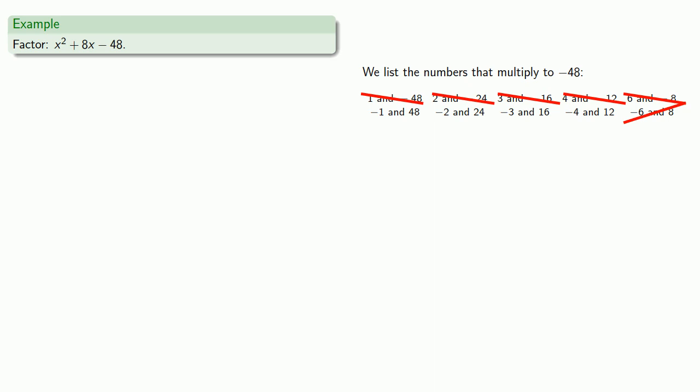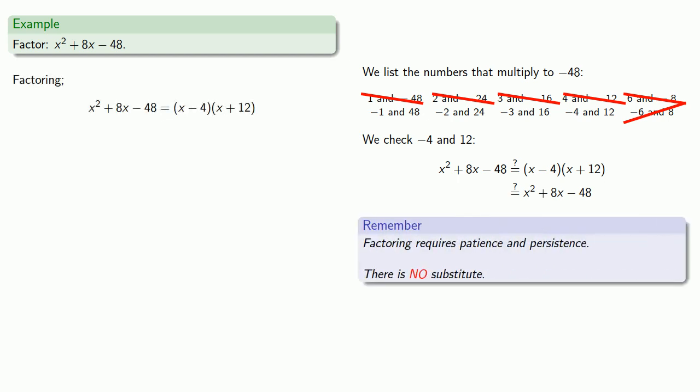Well, we have other possibilities. We check negative 4 and 12. And finally, we get something that works. So again, remember, factoring requires patience and persistence. There is no substitute.